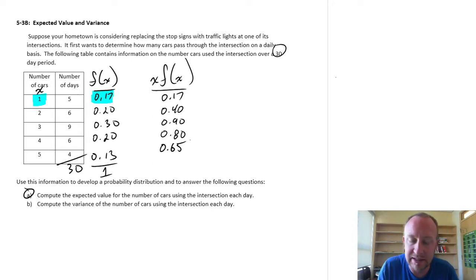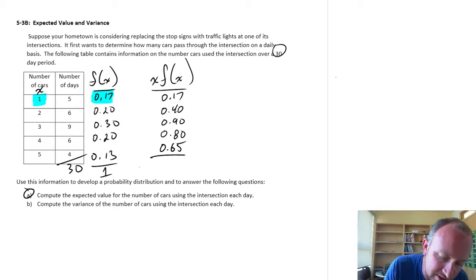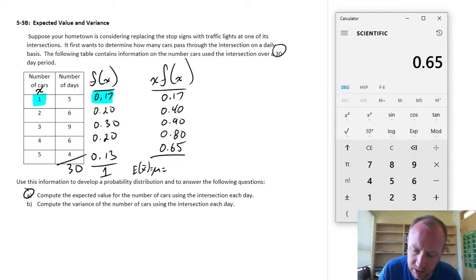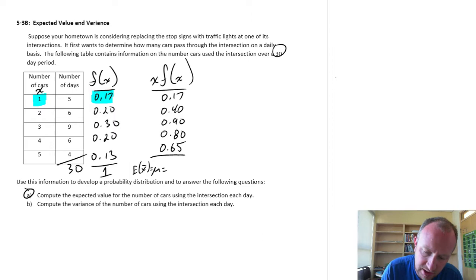Now in order to calculate the expected value, we simply need to add all of these up, and that will give us our expected value, here we'll call this mu. So if I add all of these together, this is going to be 0.65 plus 0.8 plus 0.9 plus 0.4 plus 0.17, which equals 2.92. So there's our expected value.